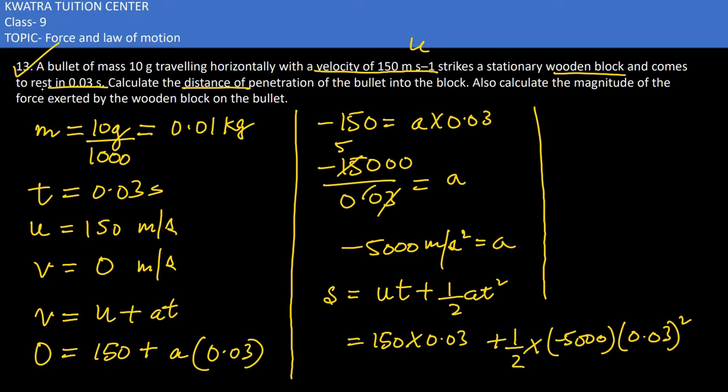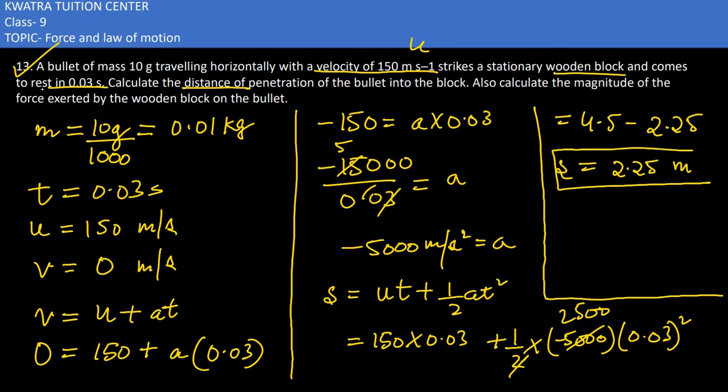Now multiplying 150 with 0.03, so you would get approximately the answer would be 4.5. Minus sign would be there. Divide 2 and 5000, you would get 2500, and multiply 2500 with 0.09. So it would give you 2.25. Now minus 4.5 and 2.25 will give you 2.25 meters. This much distance the bullet can penetrate into the wooden block.